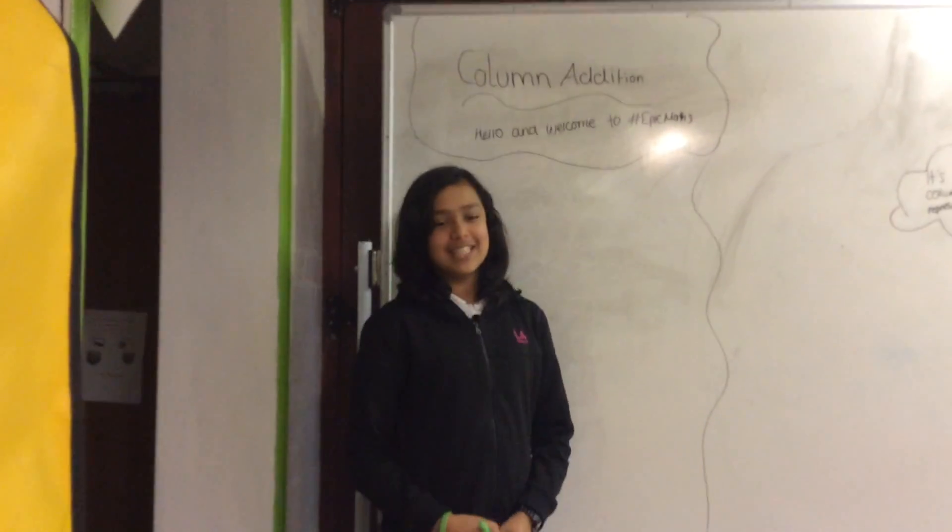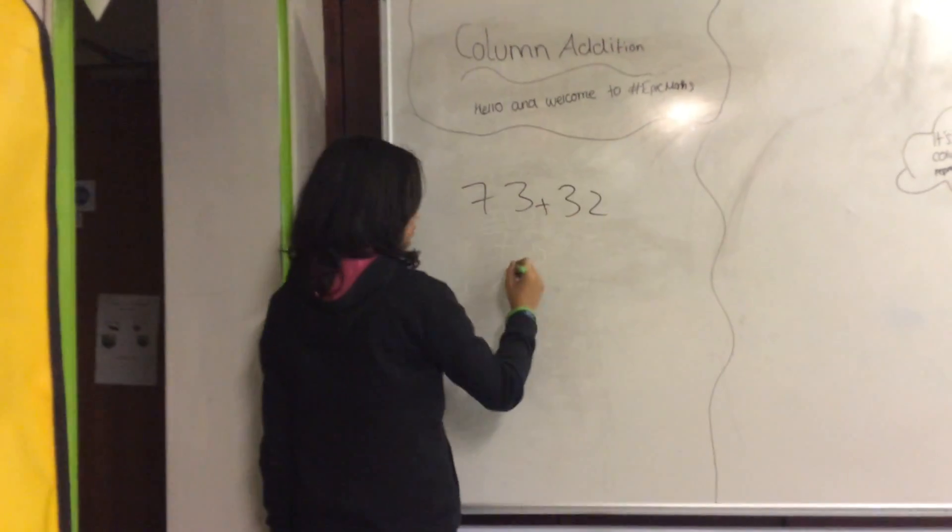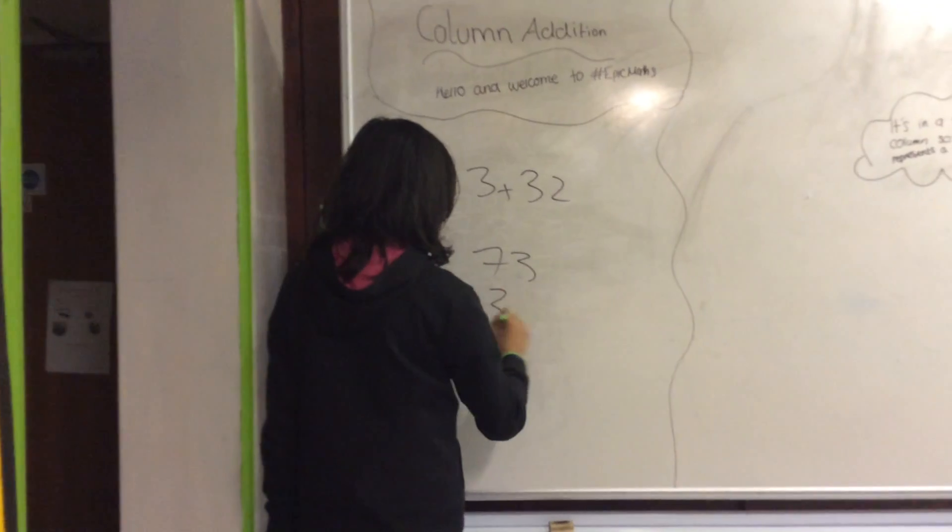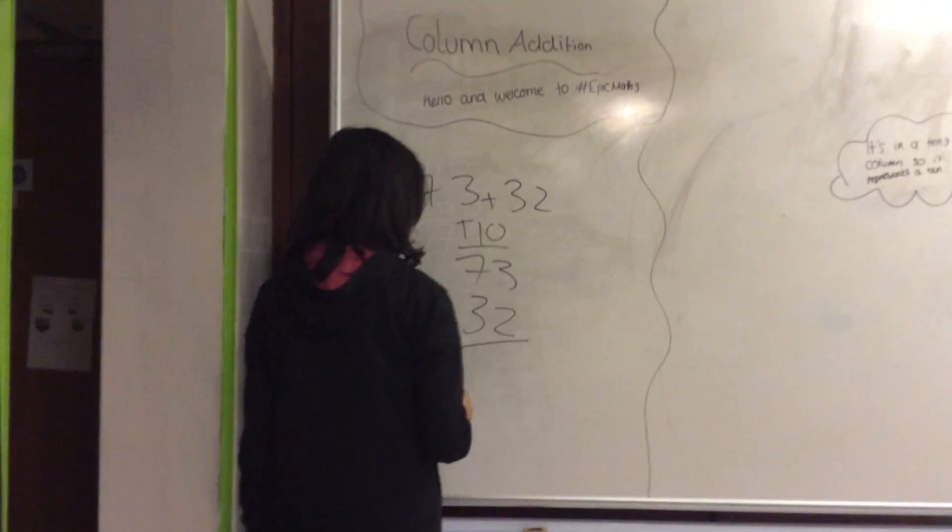Now here is a more challenging question for you to try: 73 plus 32. You put them both on top of each other like this. You put the add sign, tens and ones, and then you do that.